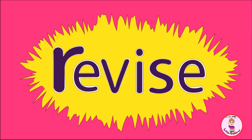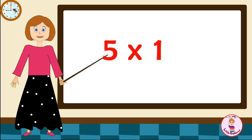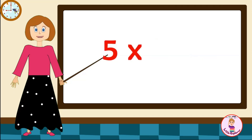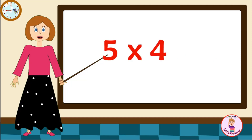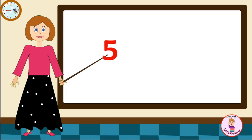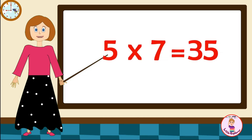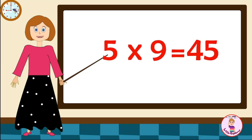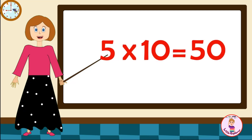Let's revise it one more time. Come on! Five-one's are five. Five-two's are ten. Five-three's are fifteen. Five-four's are twenty. Five-five's are twenty-five. Five-six's are thirty. Five-seven's are thirty-five. Five-eight's are forty. Five-nine's are forty-five. Five-ten's are fifty.